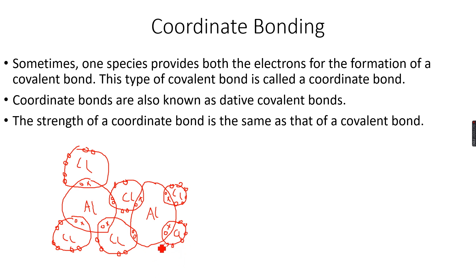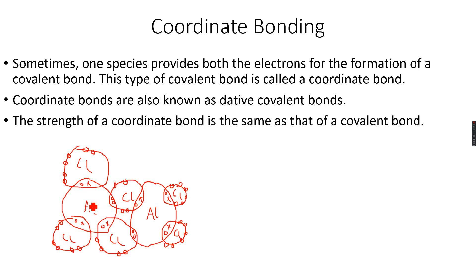This chlorine atom, which belonged to the AlCl3 on the left, donated one of its lone pairs to the aluminium. And this chlorine atom on the right donated one of its lone pairs to the aluminium on the left. So now both aluminium atoms have 8 electrons in total around them, making them more stable — that's why this is the most stable compound.